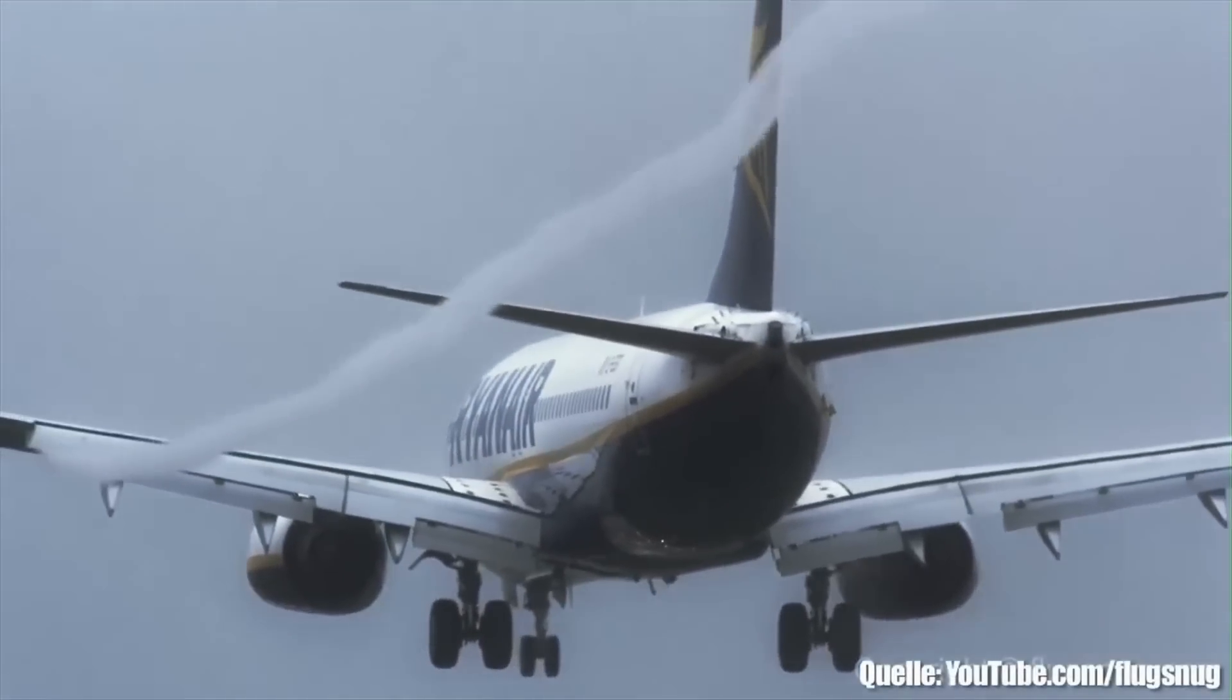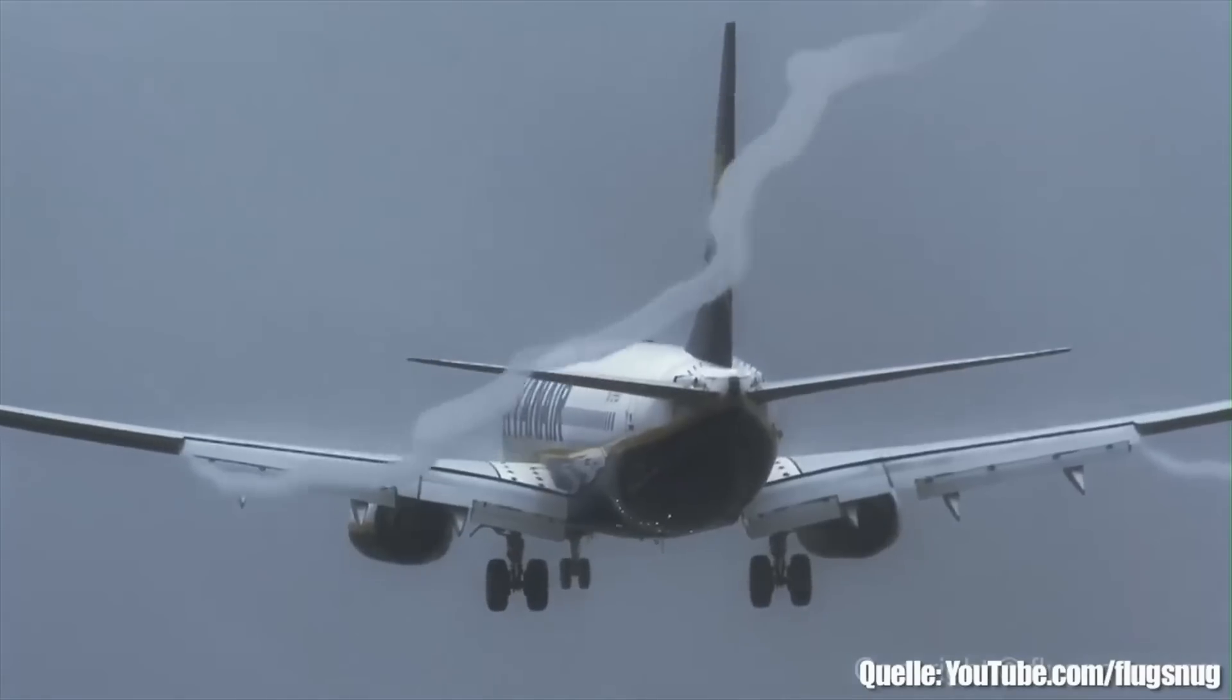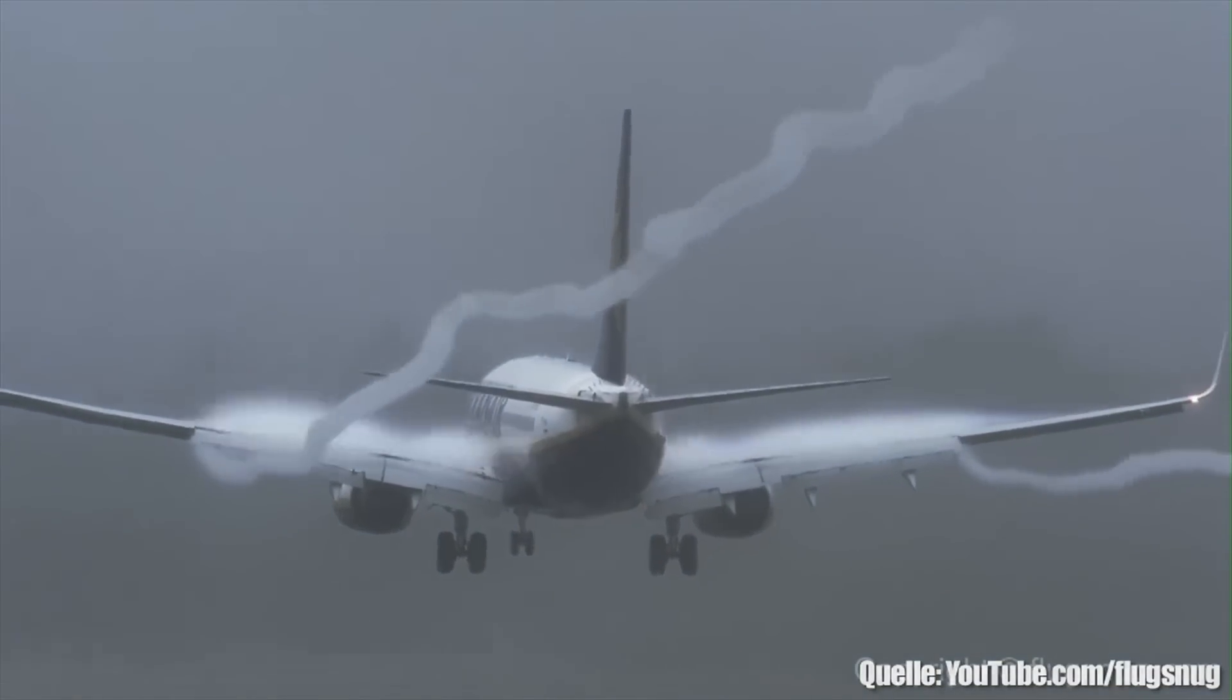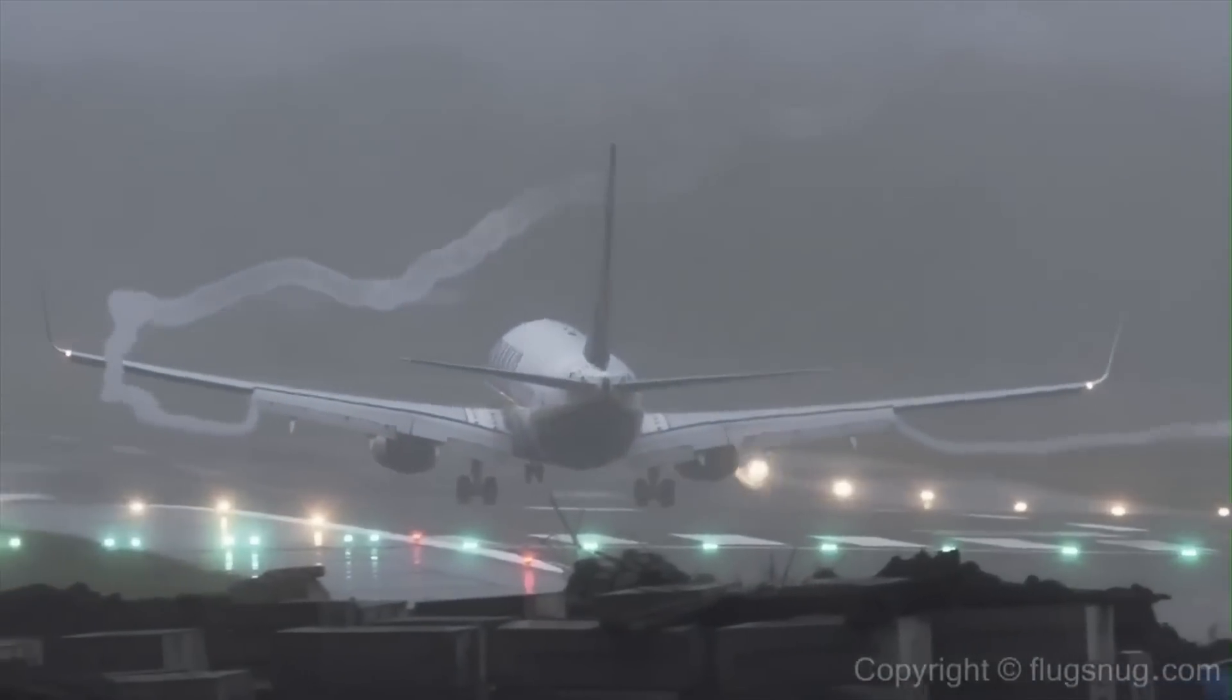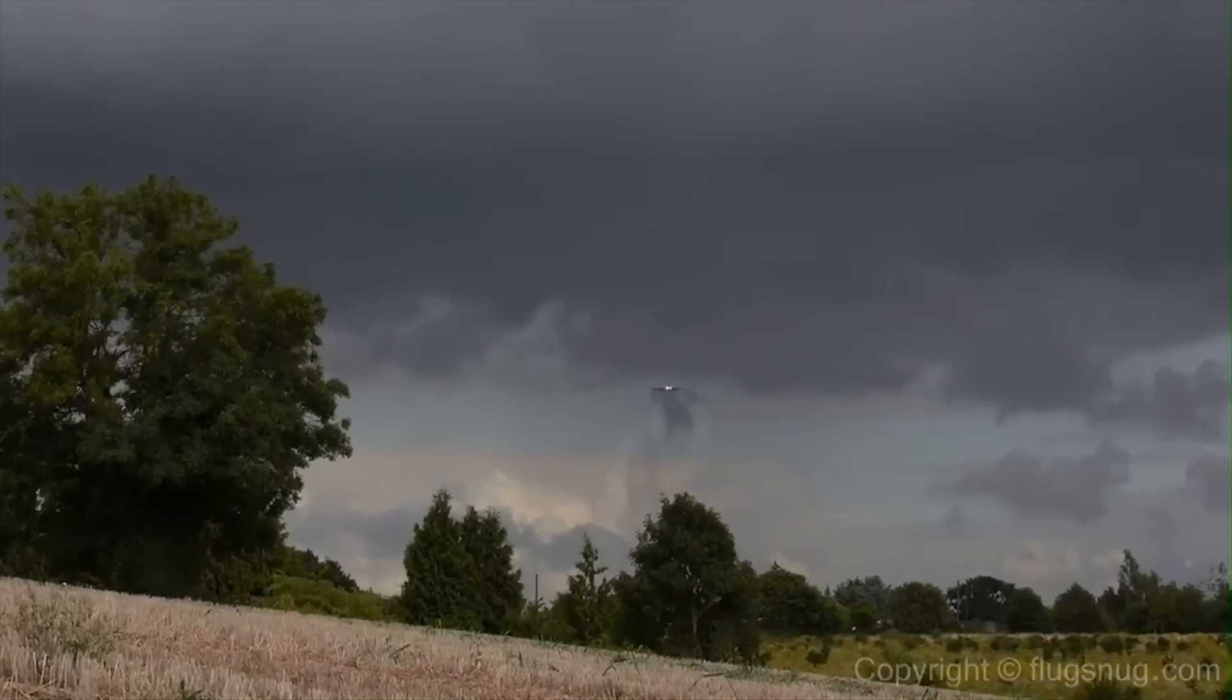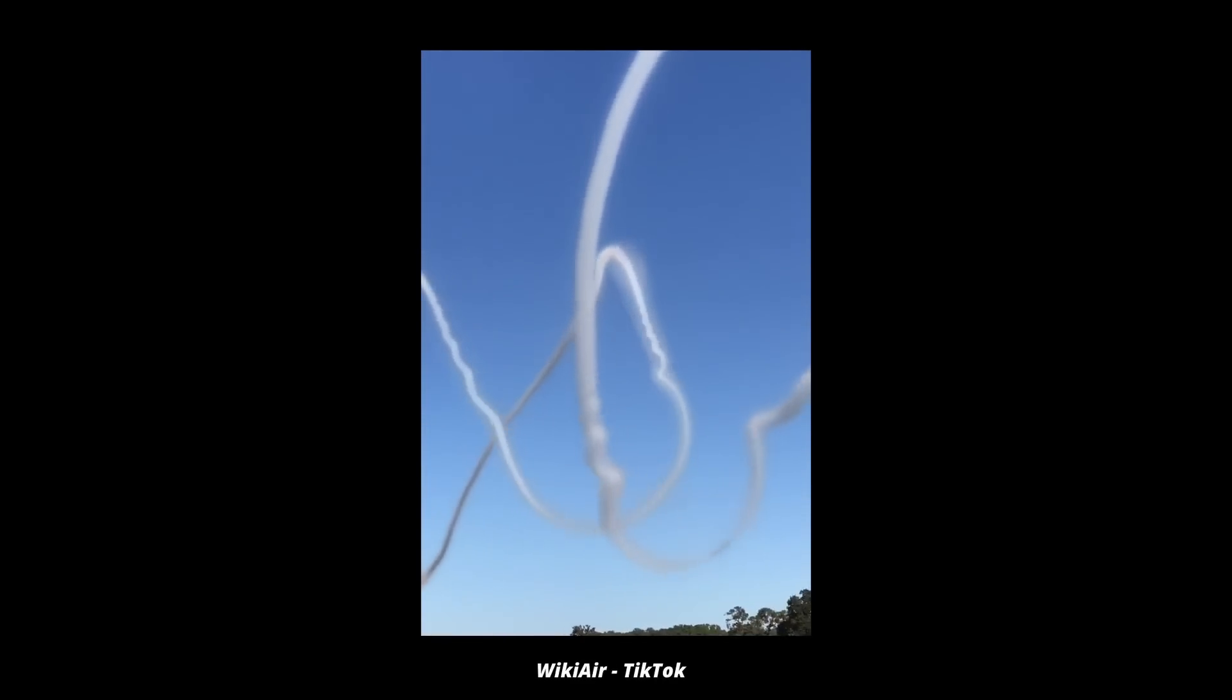Vortices are also often formed on airplane wings, where they can create long tails, but these do not rotate inside out. Airplane vortices are also amazingly stable and can travel quite far distances. Sometimes they drag tiles off roofs or cause trouble for other airplanes. They can even connect, as you can see in this remarkable video.